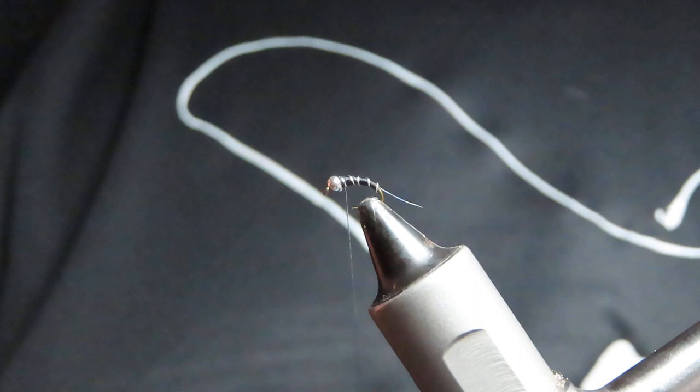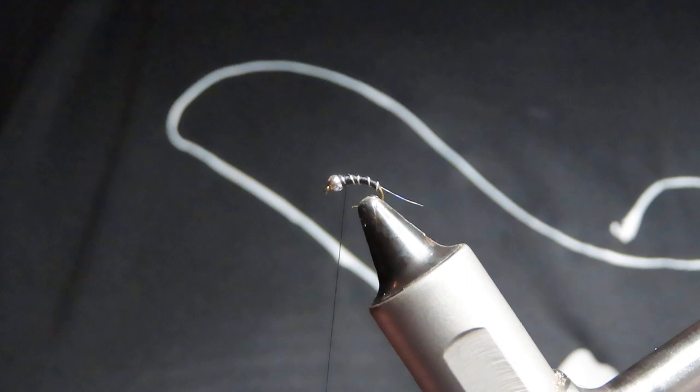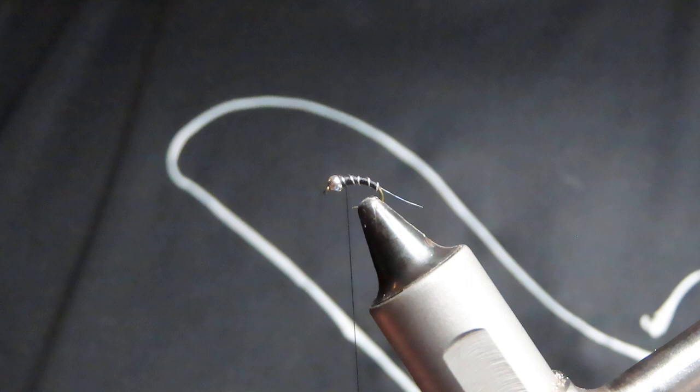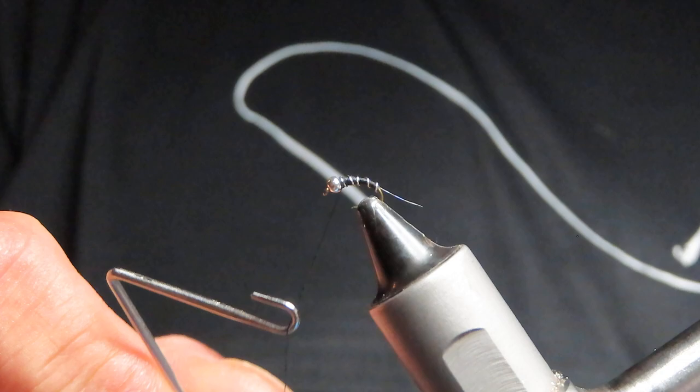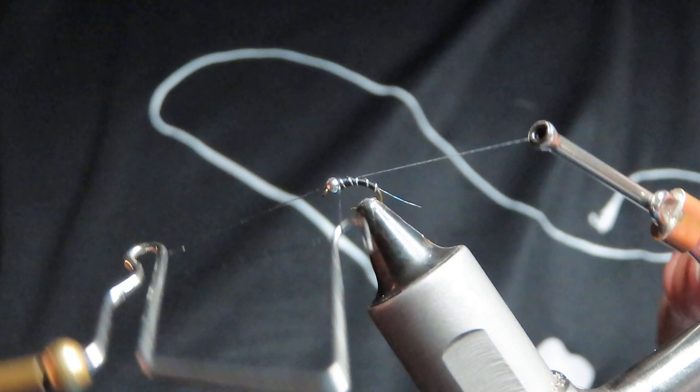Now it's time to whip finish. Hopefully I can slow down the whip finish enough for you all to see this. There are videos out on YouTube that will help you with this, but basically you're taking your whip finish tool. It's really simple, you just use the hinge here, let it flip over, and you're crossing your thread across and going around your thread about four or five times. Make sure it's tight, nice and snug.